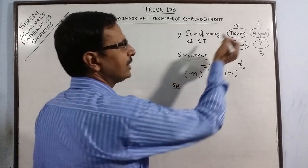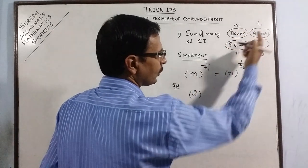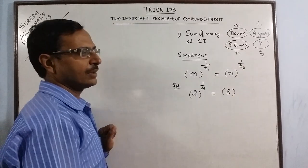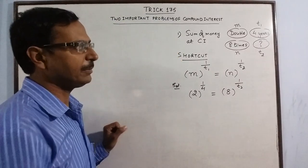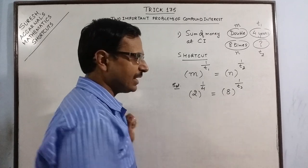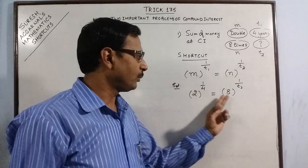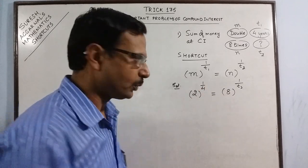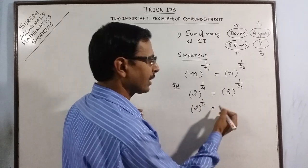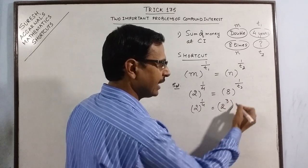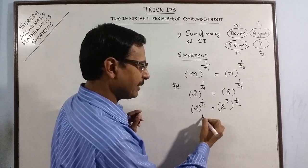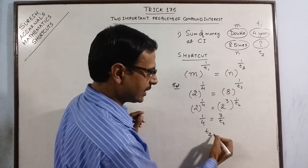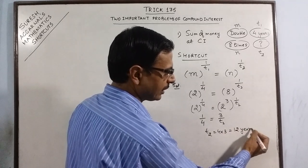Now just substitute the values. m here is double, which means 2. Time is 4 years, so 1 upon 4. Here n is 8. We need to find time t2 in which the money becomes 8 times. Now we have base 2 and base 8 — both can be expressed in the same powers. We can convert 8 as 2 raised to power 3. So 2 raised to power 1/4 equals 2 raised to power 3 times 1/t2, which gives 3 upon t2. Cross-multiplying gives t2 as 4 into 3, that is 12 years — your required answer.